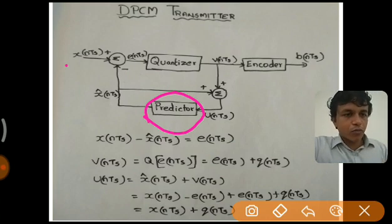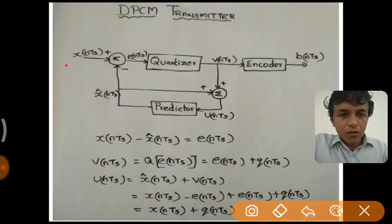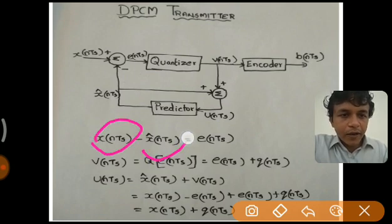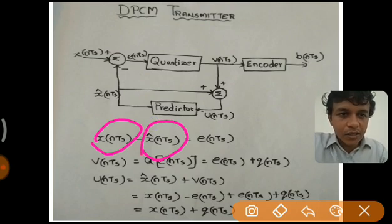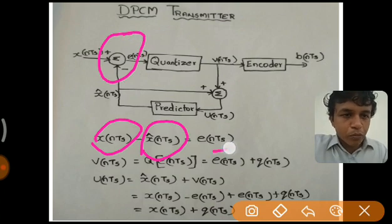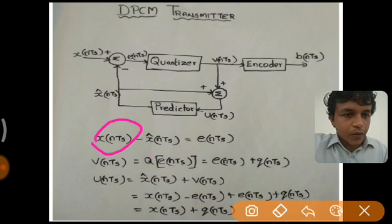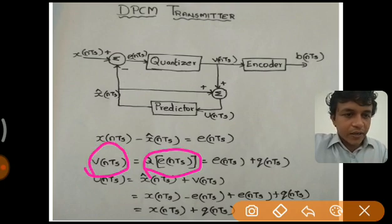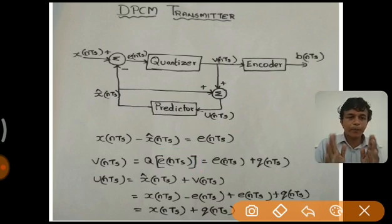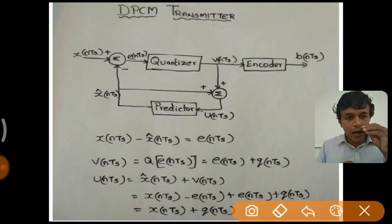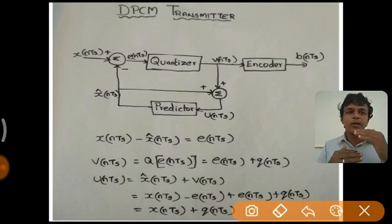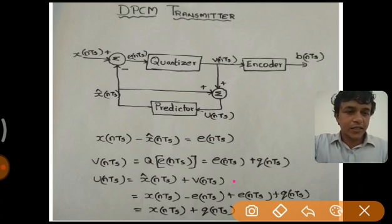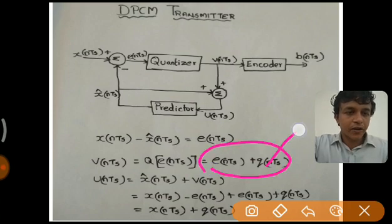The main difference between PCM and DPCM is that in DPCM, instead of quantizing the actual sample, we quantize the error signal, and a predictor block is employed. Now let us analyze these things by equation. x(nTs) is the discrete sample; the predicted value x̂(nTs) is subtracted from it, giving the error signal e(nTs). When we quantize e(nTs) we get v(nTs). During quantization we approximate the sample value — we make the signal discrete in amplitude — so a quantization error occurs.